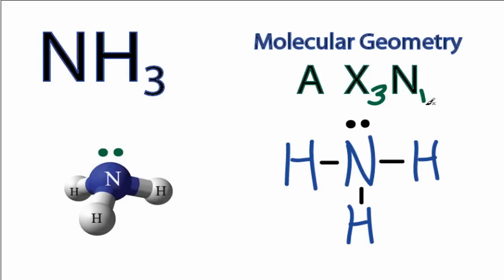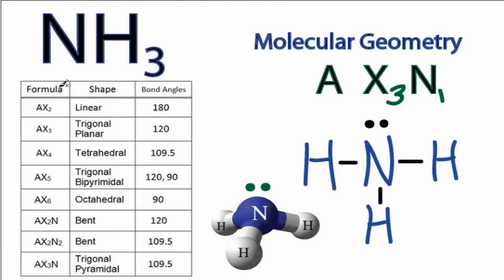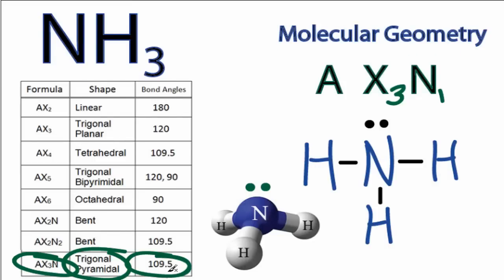or, if we're allowed to, we can look it up on a table. So if we go down here, we can find AX3N right here, and that is trigonal pyramidal, and also the bond angles are 109.5 degrees. So that's the molecular geometry for NH3.